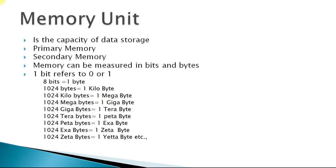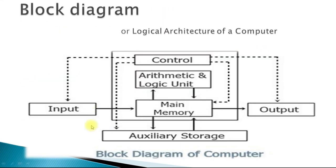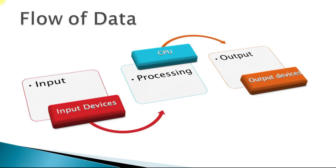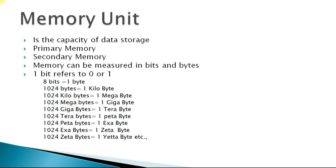Then, memory units. We have the third part here called memory units. It's a main memory as well as auxiliary memory divided. Memory unit's responsibility is it's a capacity of data storage. We have primary memory as well as secondary memory. Memory can be measured in bits and bytes. One bit refers to 0 or 1. Memory measurement units are given here. One bit refers to 0 or 1.